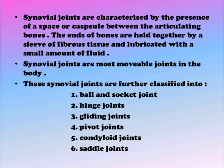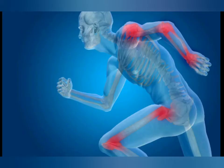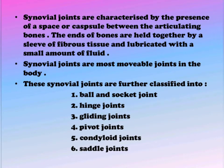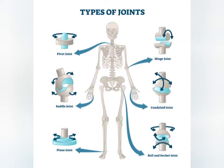The six types of synovial joints are: ball and socket joint, hinge joint, gliding joint, pivot joint, condyloid joint, and saddle joint. In the ball and socket joint, the head of one bone is ball shaped and articulates with a cup shaped socket of another bone.